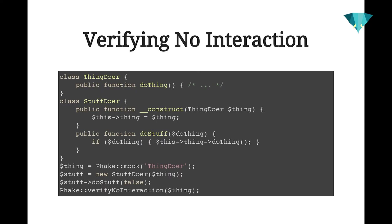If you want to verify that no interaction with the mock happens at all — say you make a call to a REST service, that call fails, and you want to verify you don't interact with your database to store any result data because the call failed — you can use verifyNoInteraction. I've got a ThingDoer class and a StuffDoer class that depends on it. Based on the doThing parameter I pass to doStuff, it may or may not invoke the method on ThingDoer. When I call doStuff with a value of false, I can tell Fake to verify that no interaction happens with the ThingDoer mock object.